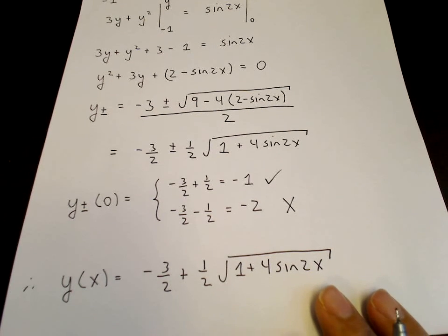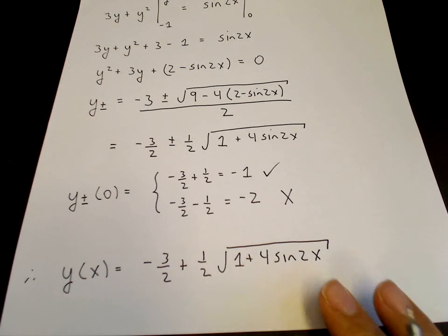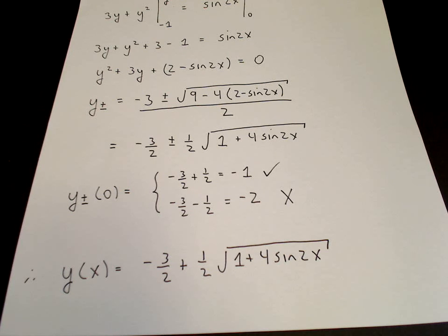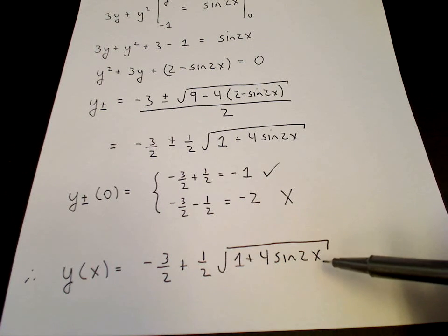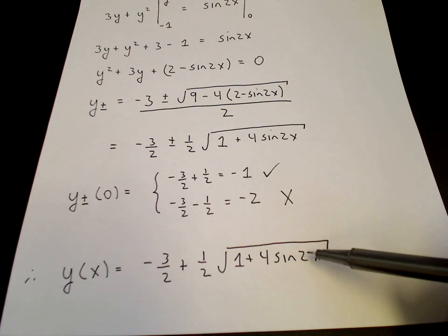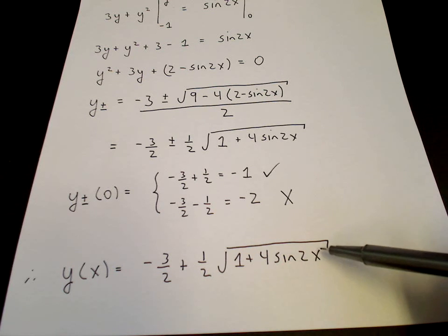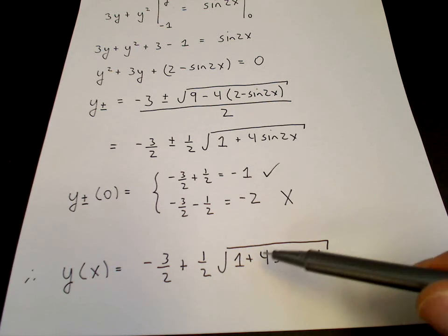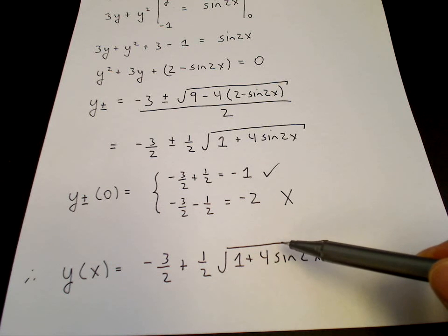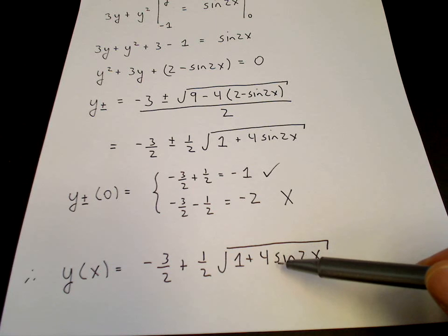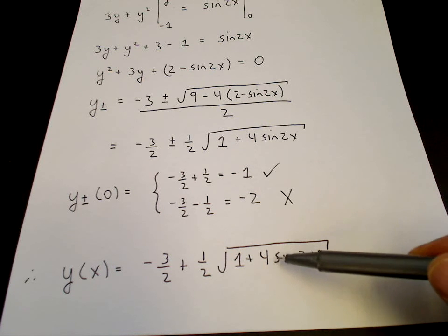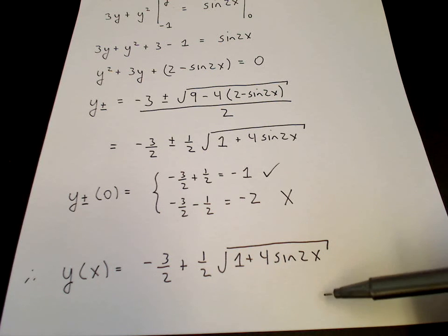Now, it turns out that this solution has a rather odd property. When we start at x equals 0, sine of 0 is 0, so the integrand is 1. Then as x increases from 0, the sine increases until eventually the sine becomes 1 and we get a square root of 5. Then the sine will decrease back to 0. And then the sine will become negative.